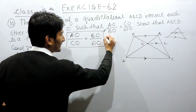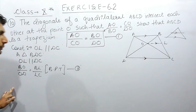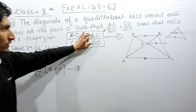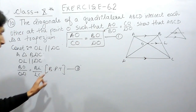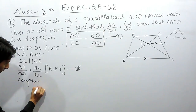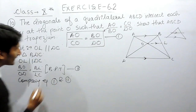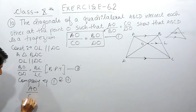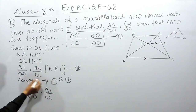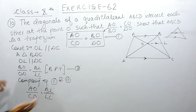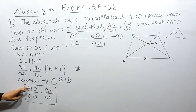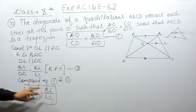Now, this AO/CO = BO/DO was given to us — call this equation two. Comparing equations one and two: both have BO/DO on one side. Since one side is equal, the other side must also be equal. So we can conclude that AO/CO must be equal to BL/LC.